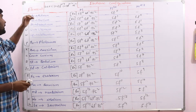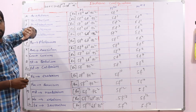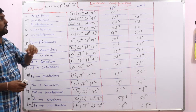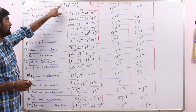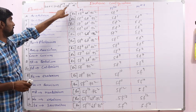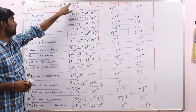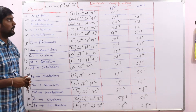So here for actinoids, what is the general valence electron configuration? It is (n-2)F 0-14, (n-1)D 0-2, nS2.